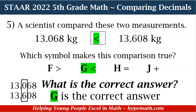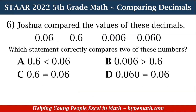Now let's move to question 6. Great job, fifth graders! Number 6 says: Joshua compared the values of these decimals — 0.06, 0.6, 0.006, and 0.060. Which statement correctly compares two of these numbers? Is it A: 0.6 is less than 0.06; B: 0.006 is greater than 0.6; C: 0.6 is equal to 0.06; or D: 0.060 is equal to 0.06?